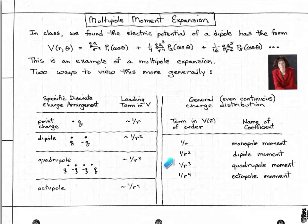The coefficient of the 1 over r squared term is called the dipole moment. Coefficient of 1 over r cubed is the quadrupole moment, and so on.